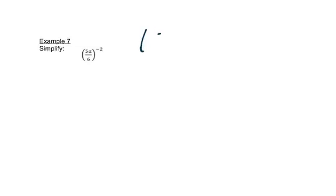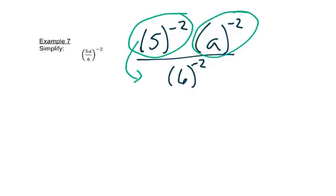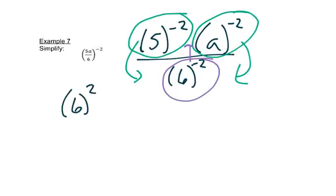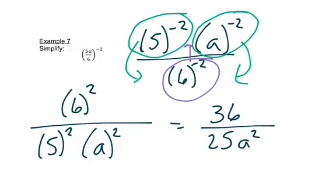This negative 2 on the outside goes to everything inside, so we have 5 to the negative 2, a to the negative 2, and 6 to the negative 2. Remember, a negative exponent means to move it. So the 5 to the negative 2 and a to the negative 2 that were on top move to the bottom, and the 6 to the negative 2 that was on the bottom moves to the top. When we do that, the exponents become positive. So 6 to the 2nd is on top, and 5 to the 2nd and a to the 2nd are on the bottom. Simplifying: 6 times 6 is 36, and 5 times 5 is 25 — giving us 36 over 25a squared.